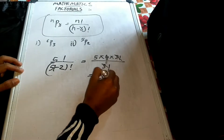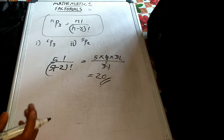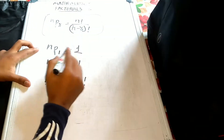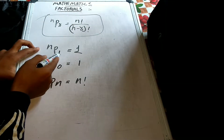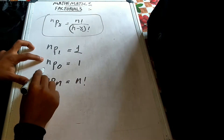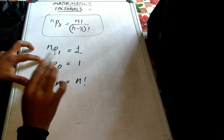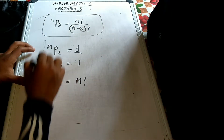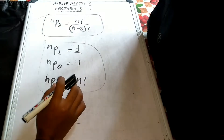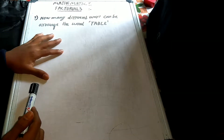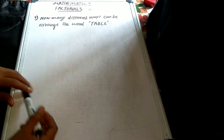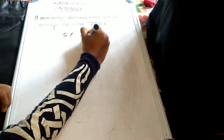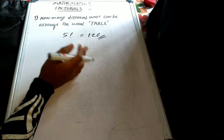How many ways can the word TABLE be arranged? TABLE is the spelling — one, two, three, four, five — so 5 letters. Therefore 5 factorial equals 120.